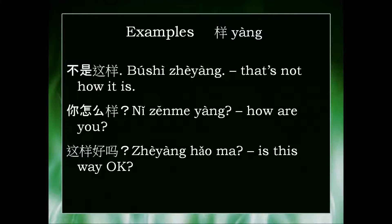The next example is 你怎么样, which means how are you. 你 means you, 怎么 means how, and 样 means way. So directly translated it's 'what way are you?' but the natural translation is 'how are you?'